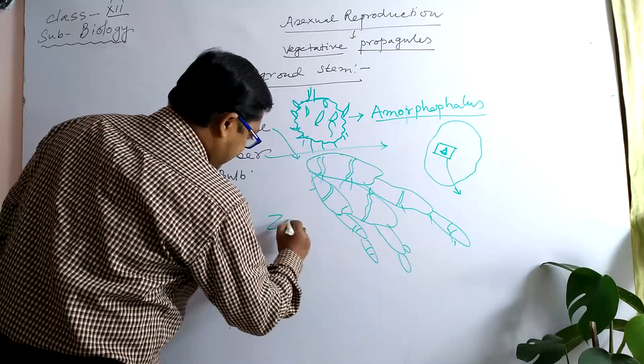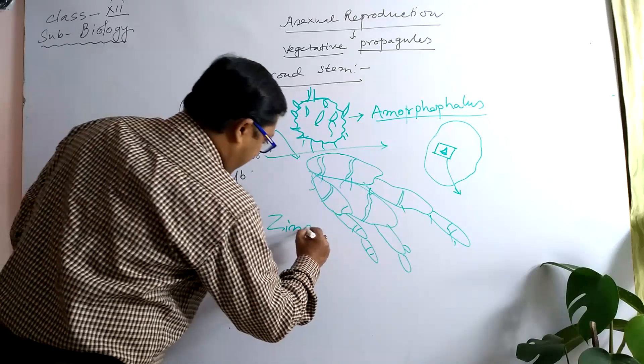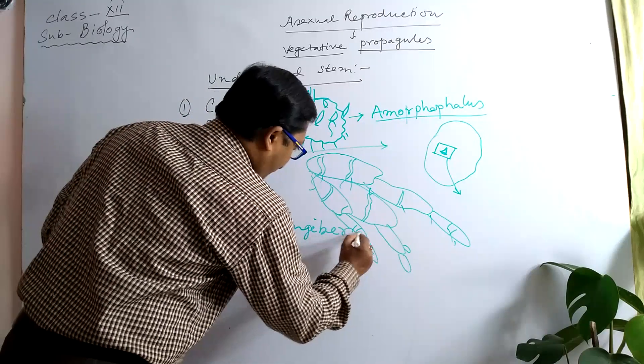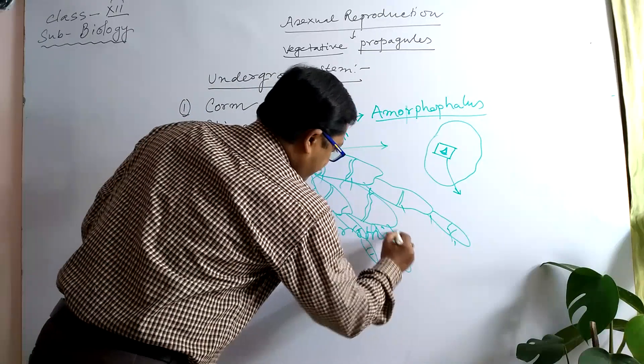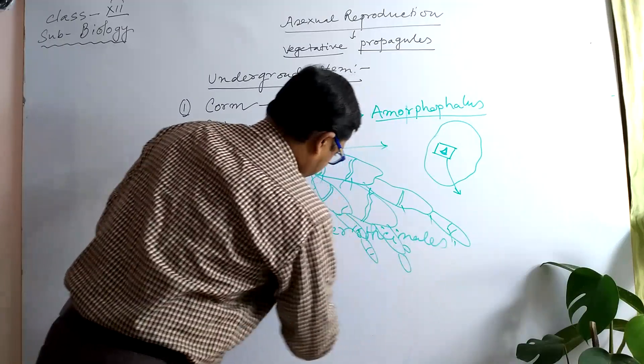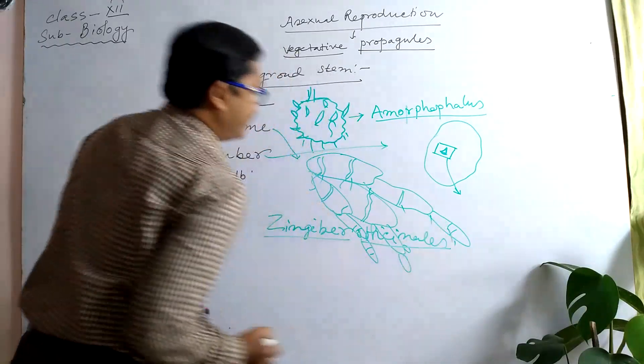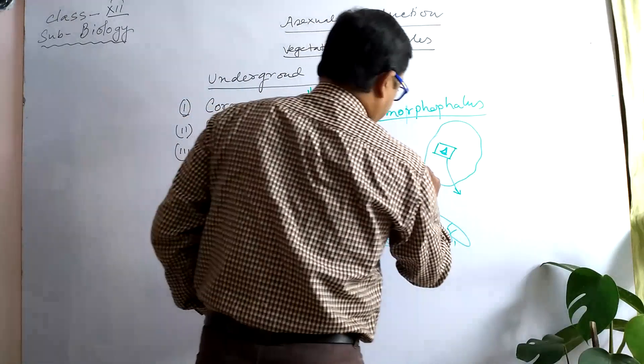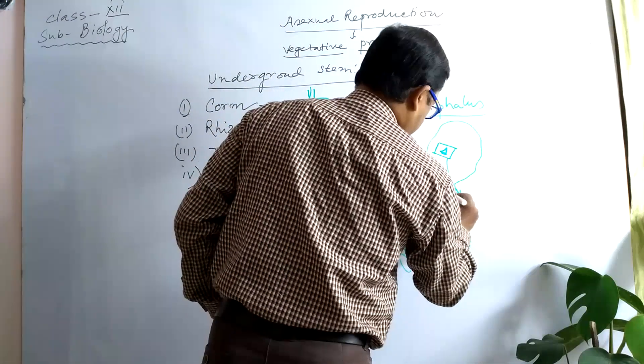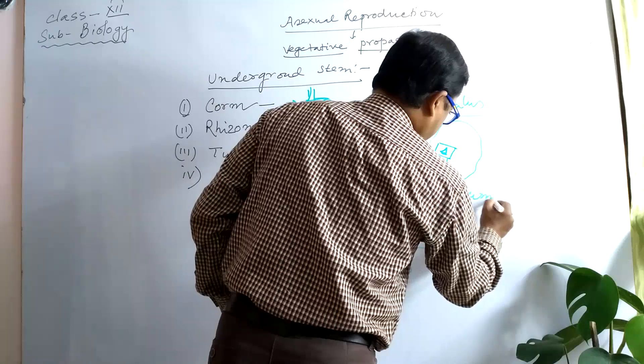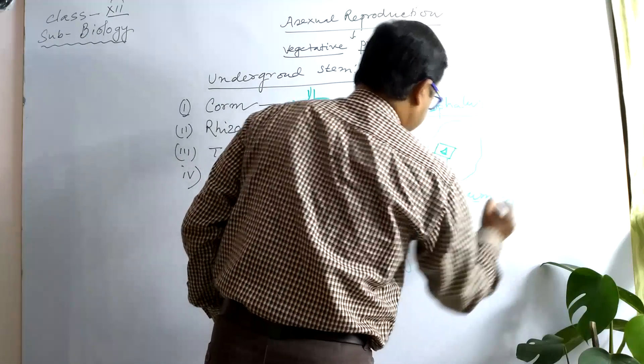This is the potato Solanum tuberosum, ginger is Zingiber officinalis, rhizome is Zingiber officinalis, tuber is potato Solanum tuberosum species.